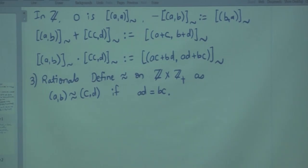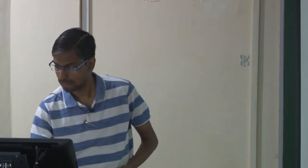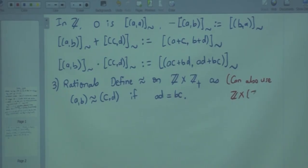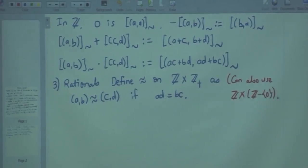You can add, subtract, find 0, find 1, multiply, and divide. If you wish, you can also use ℤ × (ℤ∖{0}) and define the same equivalence relation — the set of equivalence classes will still be in bijection. We do not really need negative denominators because −p/q is the same as p/(−q). These are your rational numbers.